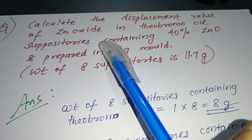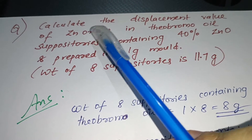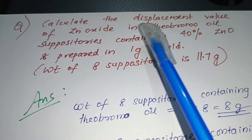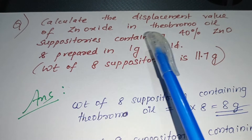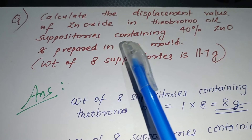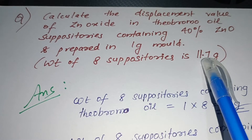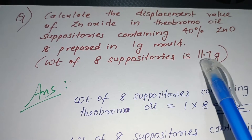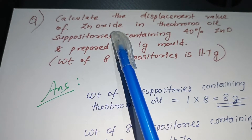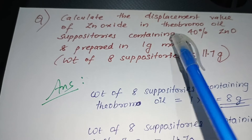Let us discuss a pharmacy calculation question. Calculate the displacement value of zinc oxide in theobroma oil suppositories containing 40% zinc oxide, prepared in a 1 gram mold. The weight of 8 suppositories is provided as 11.7 gram. Here, zinc oxide is the medicament and theobroma oil is the base.